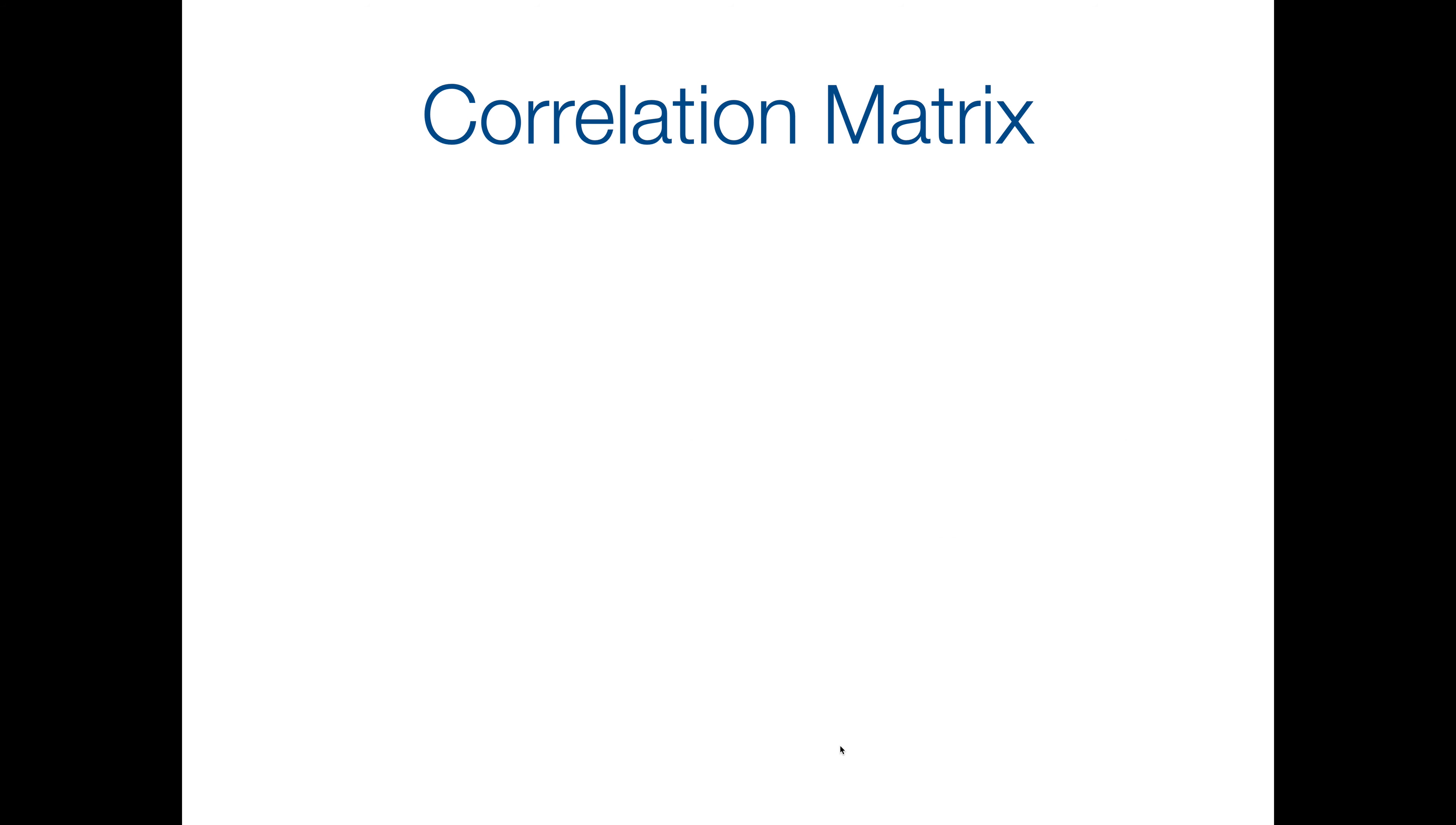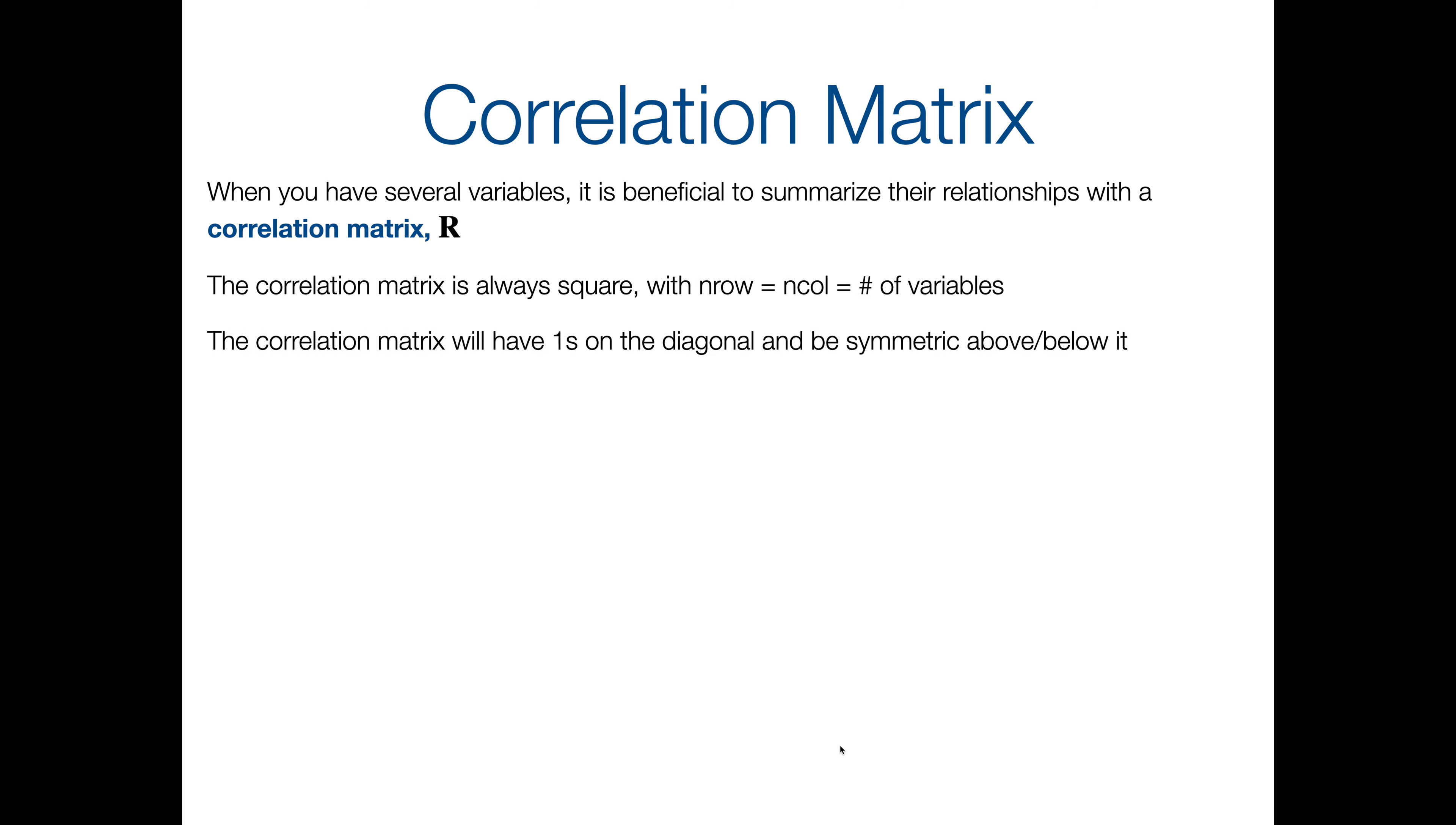And the correlation of a variable with itself is 1. So that tells us some things about our correlation matrix. So a correlation matrix is a matrix called capital R that has all of your correlations between your variables in it. It's a great way to summarize all of those relationships instead of just printing out a big list of R values. And the correlation matrix is always going to be square. So the number of rows and the number of columns is equal to the number of variables that you have. It's going to have ones on the diagonal because of that last fact, that the correlation between a variable in itself is 1. It's going to be symmetric above and below the diagonal because the correlation between a and b is the same as the correlation between b and a.